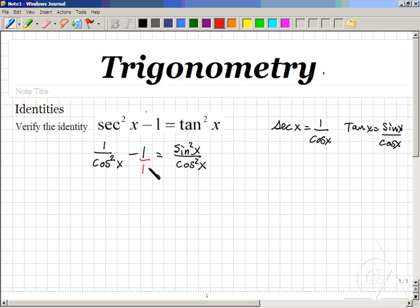So we multiply the second fraction by cosine squared x over cosine squared x. This becomes 1 over cosine squared x minus cosine squared x over cosine squared x.